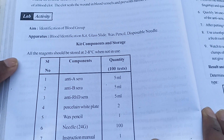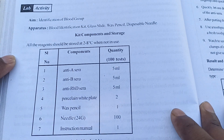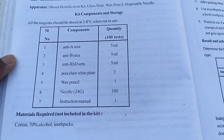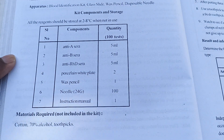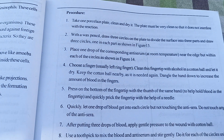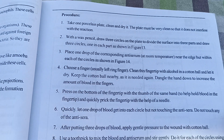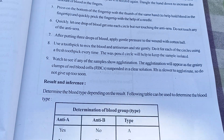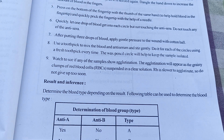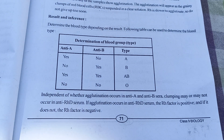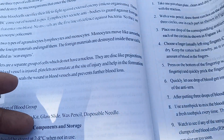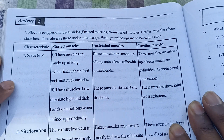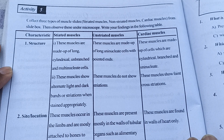This is the lab activity and this is the lab activity answer. You can see the seventh, eighth, and ninth ones here. After that this is the result and inference. I hope it is clear. After that you can see Activity 5, which is the last one in this chapter. This is Activity 5.